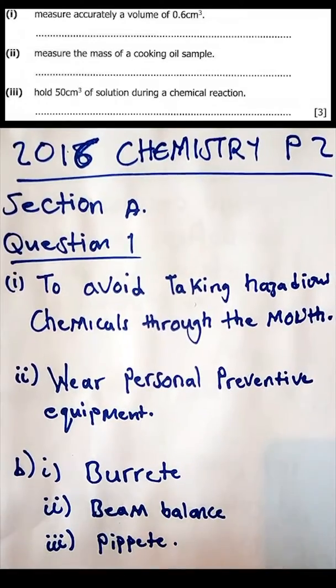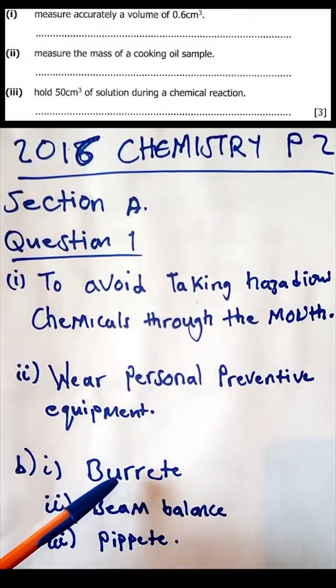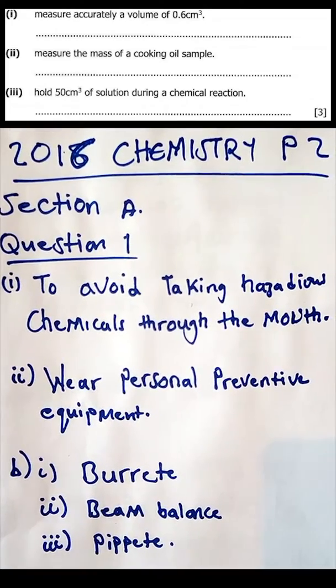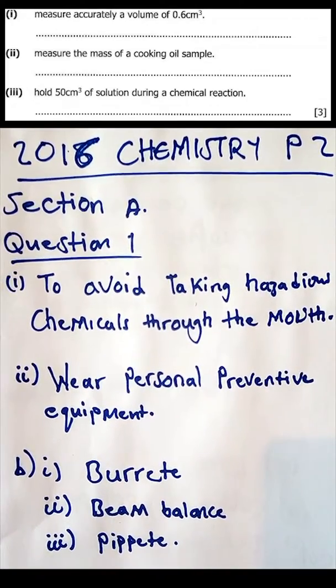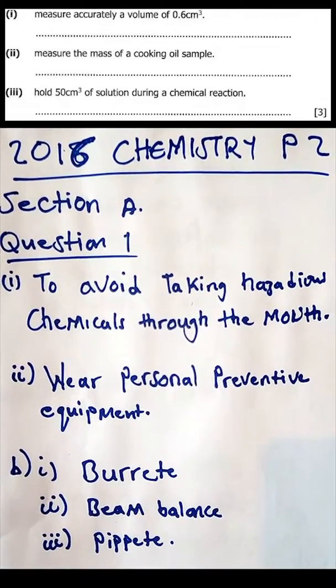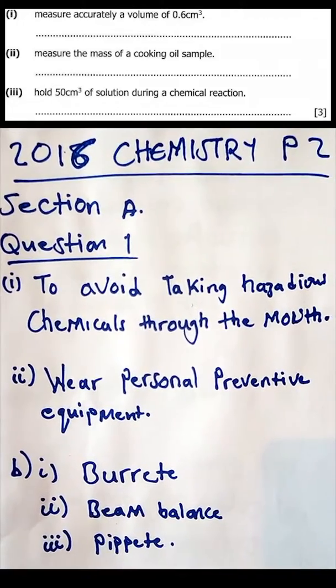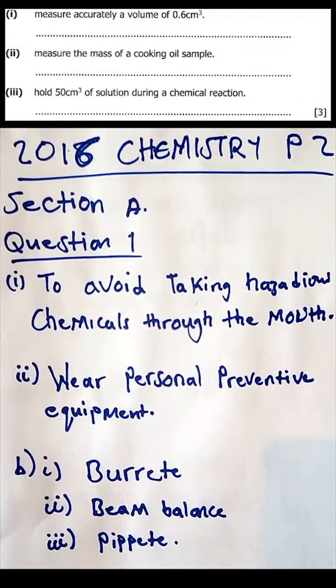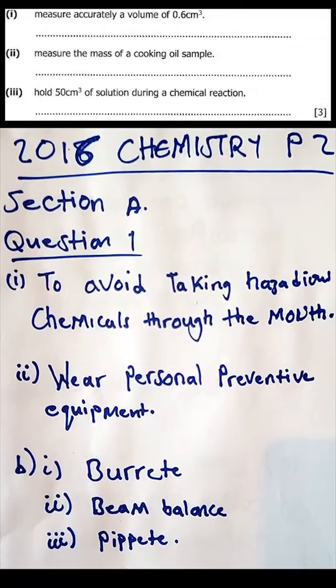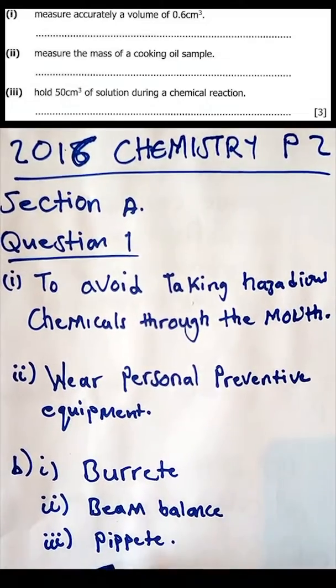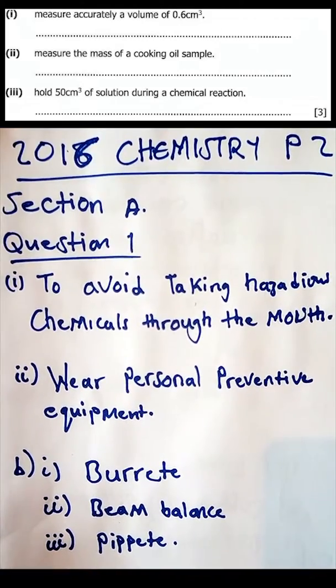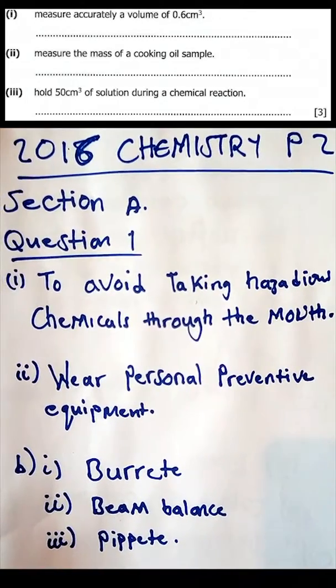To get the accurate reading of any volume you use a burette. What apparatus can be used to measure the mass of a cooking or sample? Any mass is measured with a beam balance. What apparatus is used to hold 50 cubic centimeters of solution during a chemical reaction? To hold the volume during a chemical reaction, more especially titration, you use a pipette.